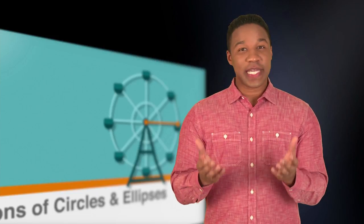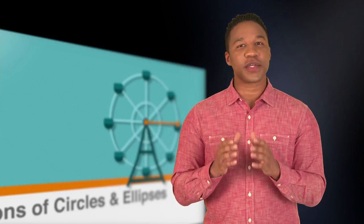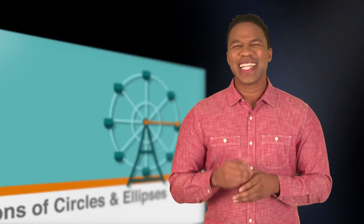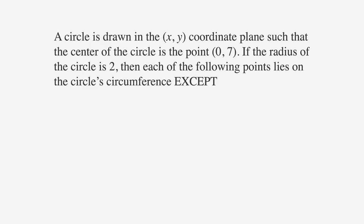One other thing you might be asked is to determine whether a particular point is on a given circle. Let me show you what I mean in a sample problem. A circle is drawn in the xy coordinate plane such that the center of the circle is the point 0,7. If the radius of the circle is 2,